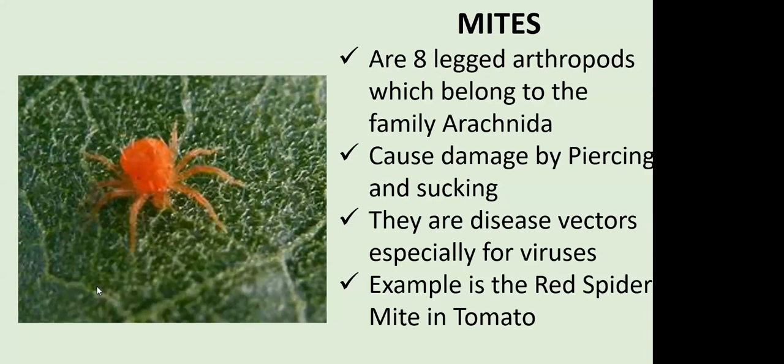Mites are also disease vectors, especially for viruses. Most of them are highly mobile and will move from one plant to another during the growing season. If they land on a plant infected by a virus, undertake the piercing and sucking, and then move to a healthy plant, they have the ability to transmit viruses from one plant to another. A good example is the red spider mite in tomato, which is very common, especially during drier parts of the season and for those who do irrigation.